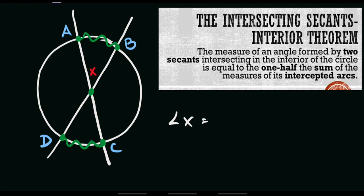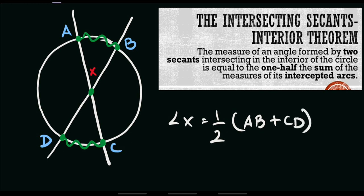Our formula is: angle x is half of the sum of its intercepted arcs. Therefore, we have arc AB plus arc CD, divided by two. That is our working equation or formula to solve this given set of problems.